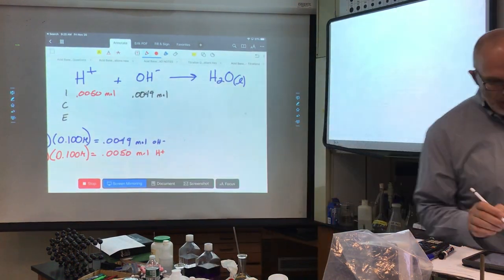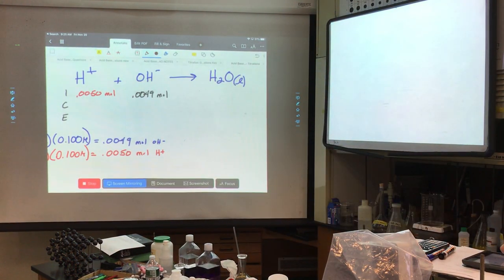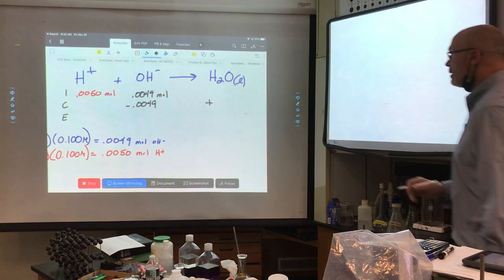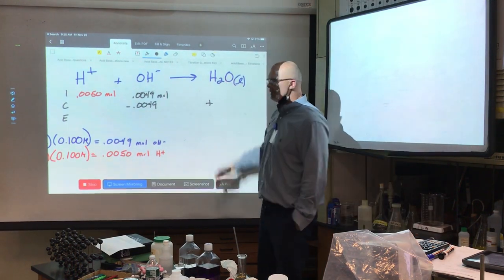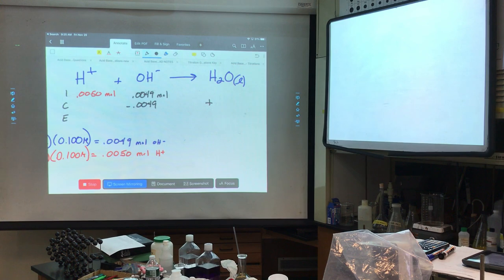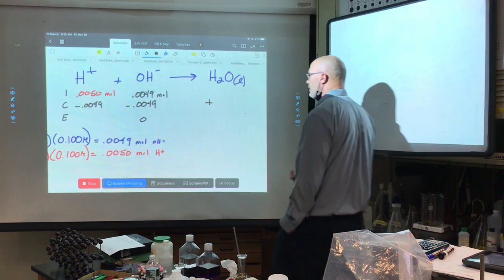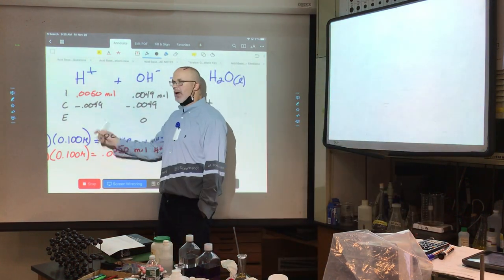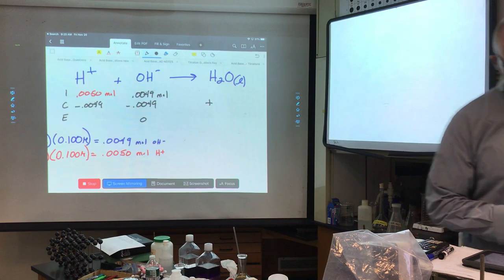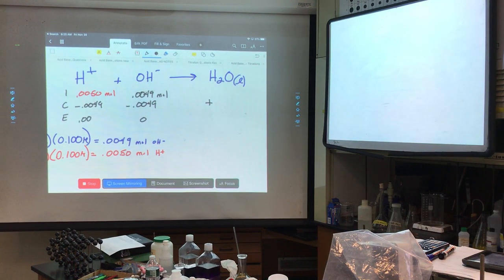So that all disappears. 0.0049, this is also minus 0.0049. It's a one-to-one, right? This goes to zero. There's no hydroxide left. But there's going to be some extra H pluses, which is 0.0001 moles left. Correct?